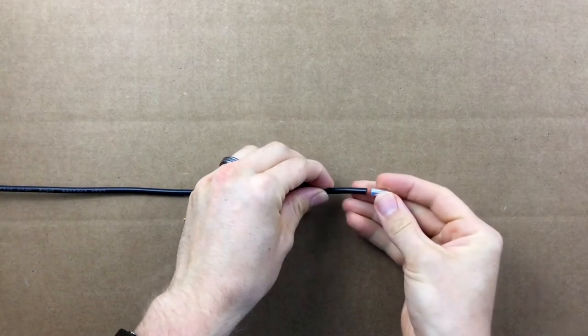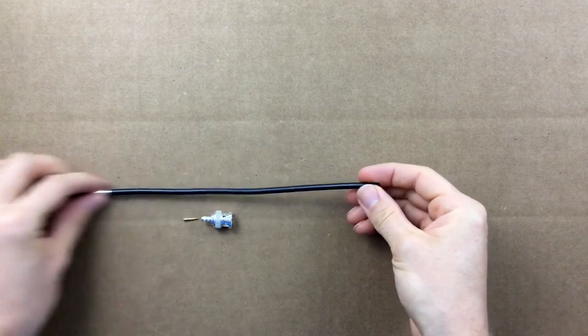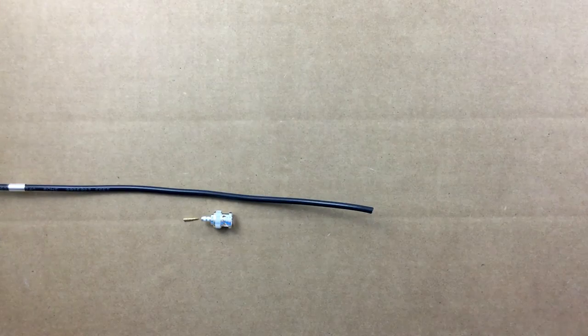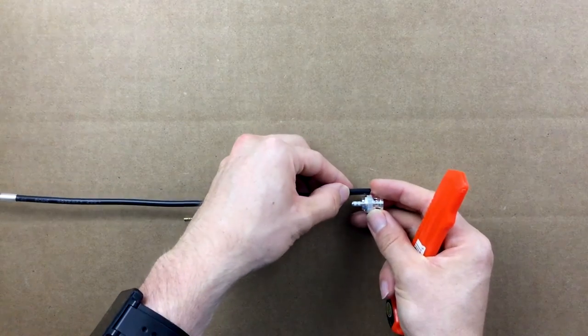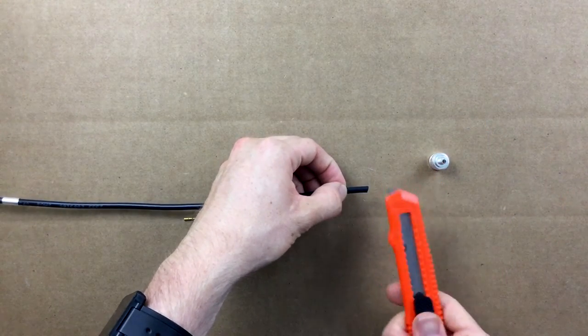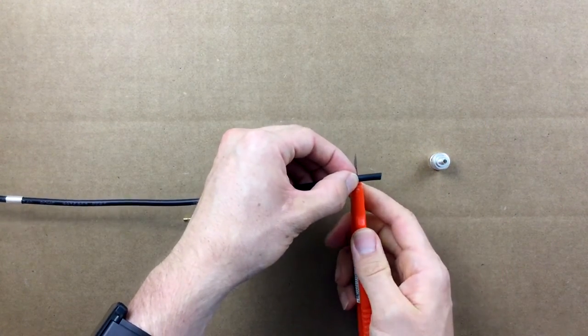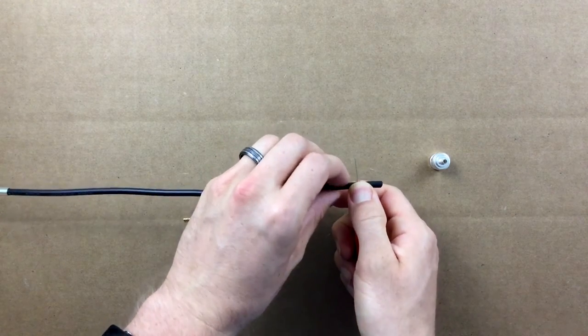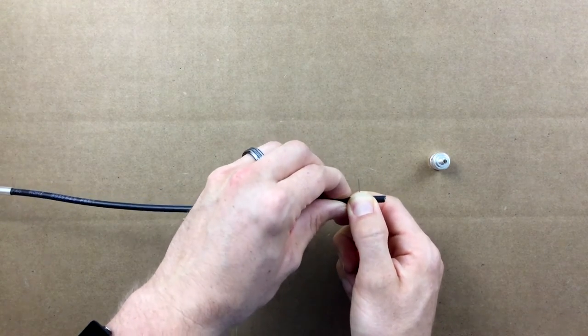We start out by sliding the connector ferrule onto the coax. Grab the BNC male body and line up the top of the knurl grip ring with the end of the coax. Place a mark or use your thumbnail to mark where to cut the black jacket of the coax, which should be five-eighths of an inch from the fresh cut end of the coax.